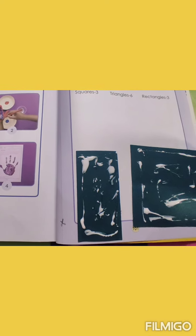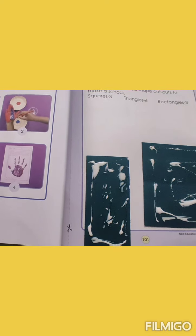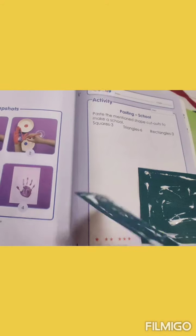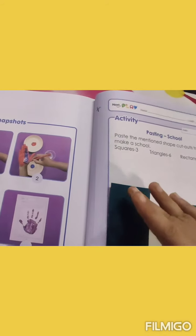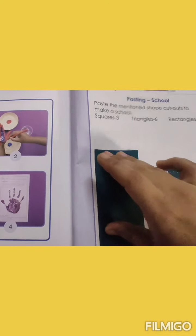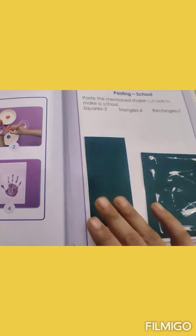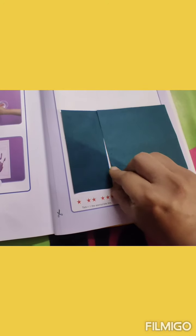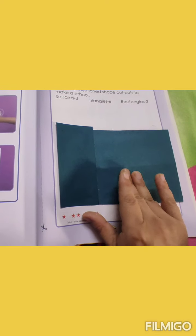See children, I have applied the glue at the back side of these shapes. Now I will turn and paste these shapes like this. This I have pasted rectangle. Now again I will turn this and join towards the rectangle. And I will paste it like this.